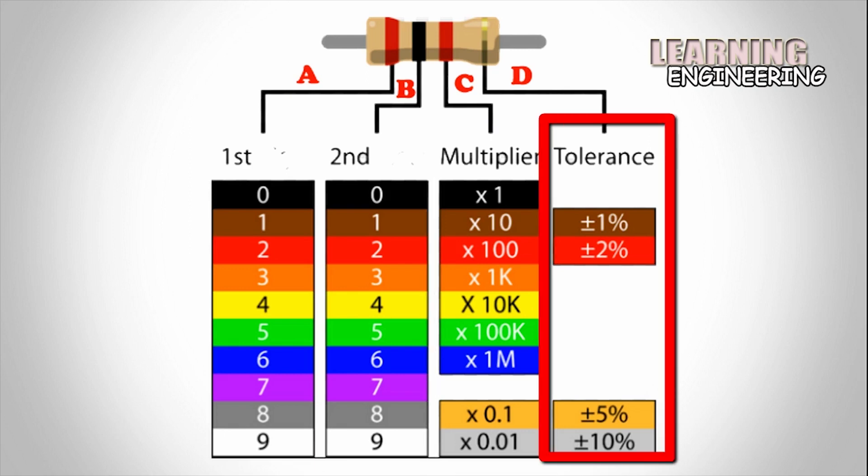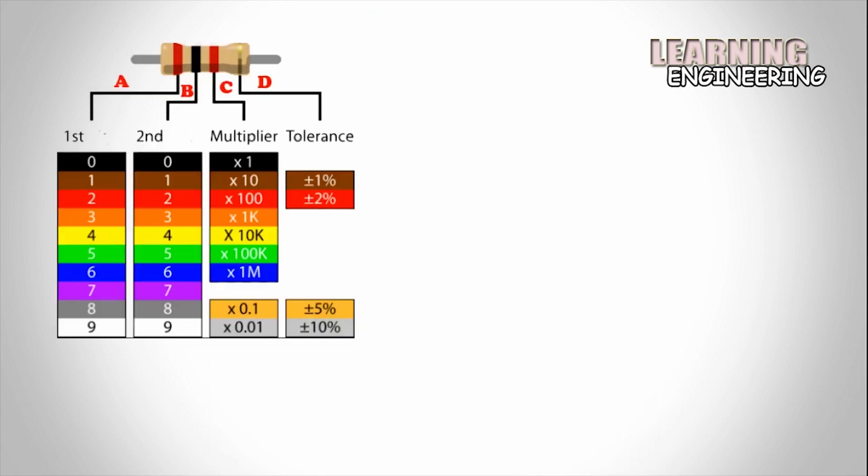Band D, if present, indicates tolerance of value in percent. And no band means 20%.